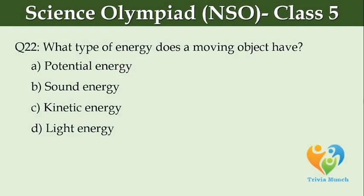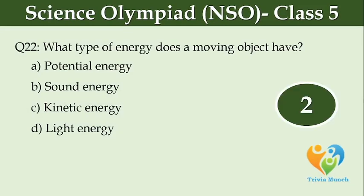What type of energy does a moving object have? Option A: potential energy, Option B: sound energy, Option C: kinetic energy, Option D: light energy.